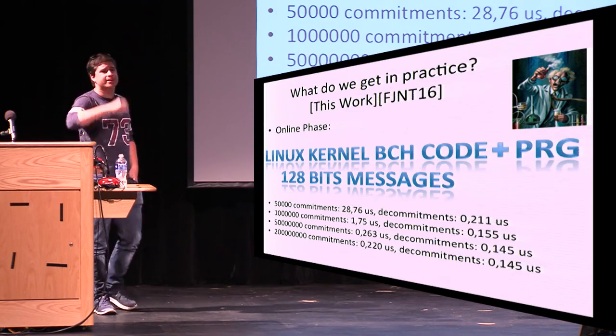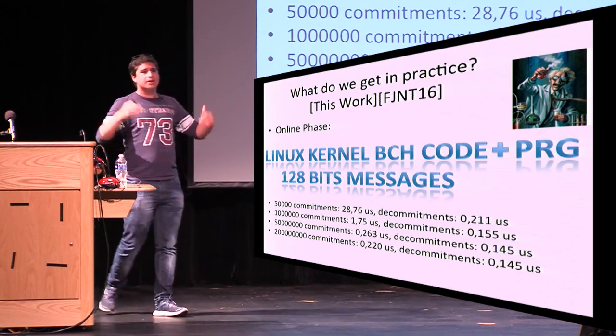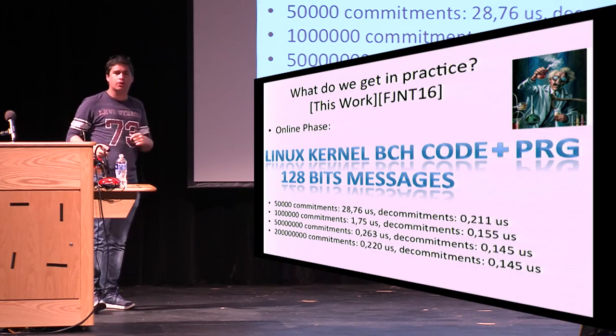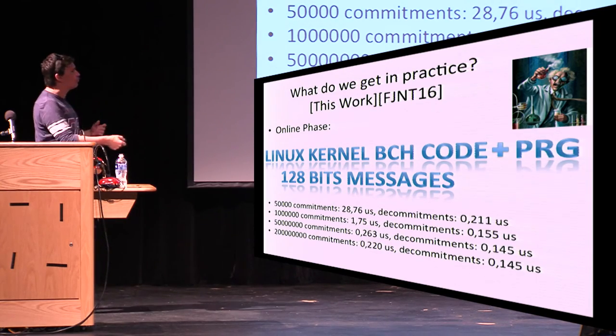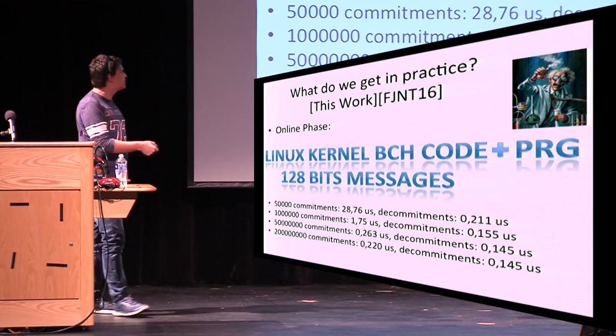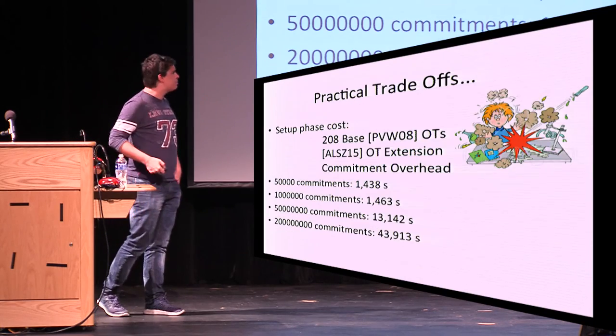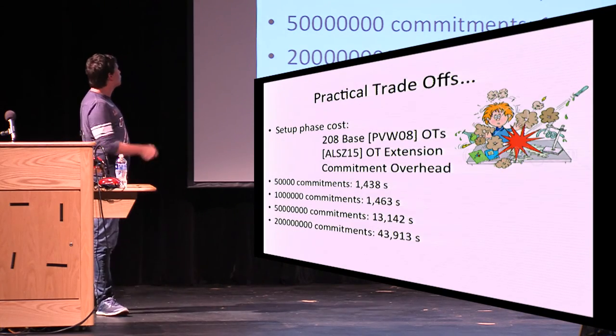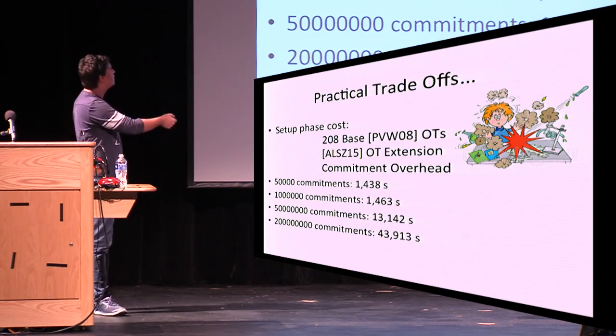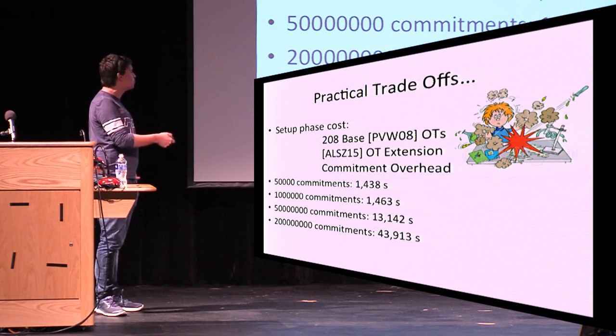Now, what can we do in practice? I'm here to tell you, you see commitments are practical. You like OT extensions, so you should like our commitments. We get basically the same performance as OT extensions. For 50,000 commitments, we can do commitments in 29 microseconds and decommit in 0.2. We only need BCH codes that are implemented in Linux kernel and PRGs, AES and so on. Of course, you have a trade-off. We need the OTs, the setup OTs. 50,000 commitments takes 1.5 seconds.